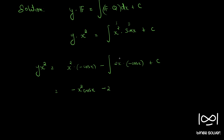Again we take this as first function and this as second function. Taking minus outside, this becomes plus 2. So this becomes plus 2 into cos x, plus integral of second function which is sin x, minus differential of first into integral of second.